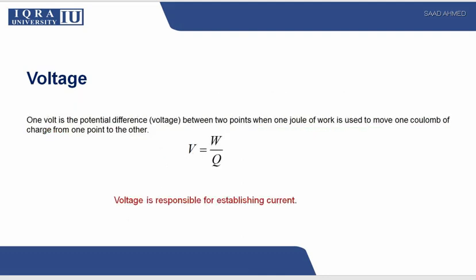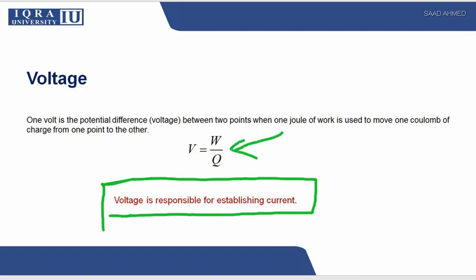The definition of voltage: one volt is the potential difference between two points when one joule is used to move one coulomb of charge from one point to another point. Voltage is responsible for establishing current. Try to remember this formula.